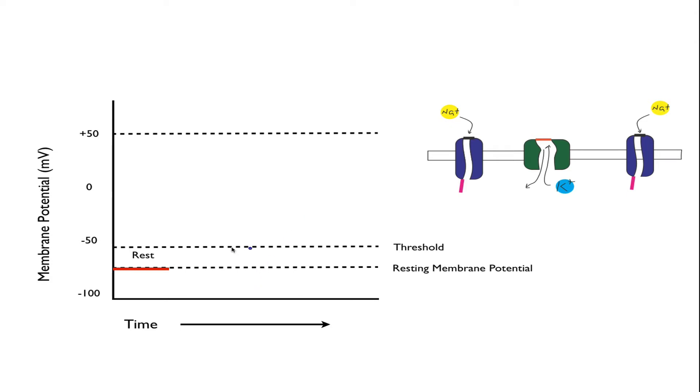So let's first look at the graph. We're beginning at rest, at the resting membrane potential, which is negative 70 millivolts in a neuron. You should be familiar with this from our last lesson on membrane potential.